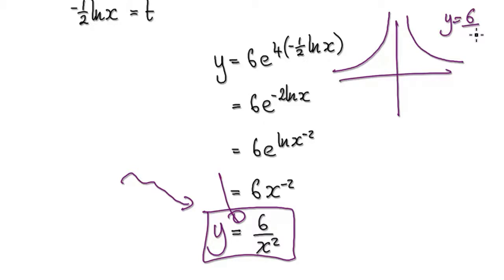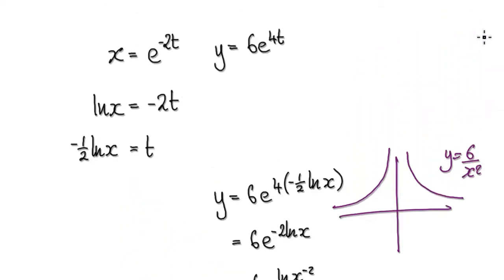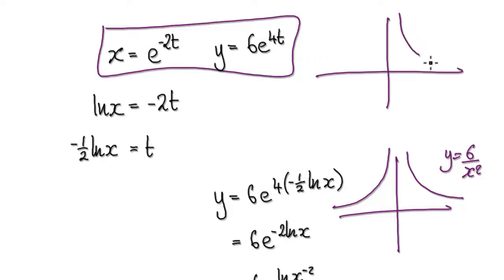But the thing is, if you get a graph plotter and plot these parametric equations, you would get a graph looking like this, just on one side.